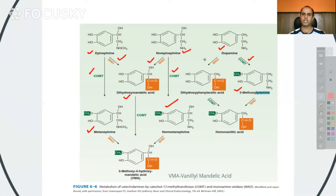Under the action of MAO, dopamine changes into dihydroxyphenylacetic acid. This dihydroxymandelic acid, under the action of COMT, then converts into 3-methoxy-4-hydroxymandelic acid, also called vanillylmandelic acid (VMA). Dihydroxyphenylacetic acid under the action of COMT forms homovanillic acid. Similarly, 3-methoxytyramine under the action of MAO also forms homovanillic acid.